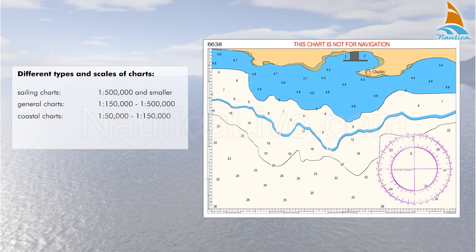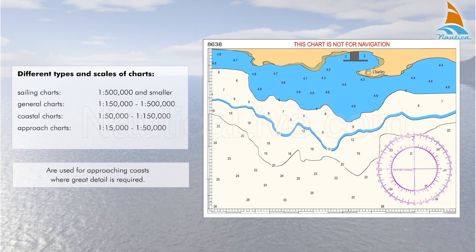The approach chart has a scale of between 1 to 15,000 and 1 to 50,000 and is used for approaching coasts where great detail is required.